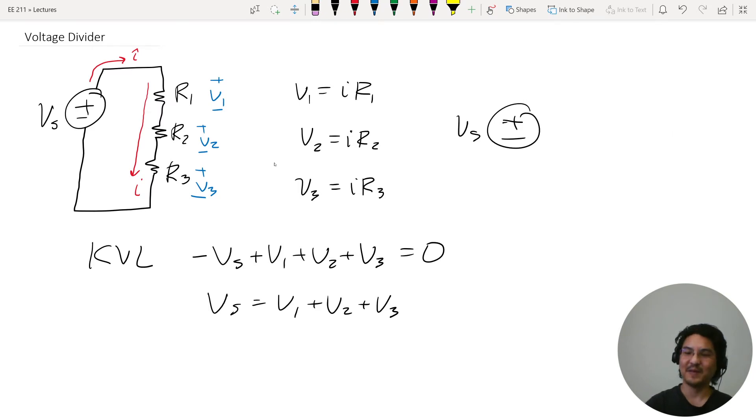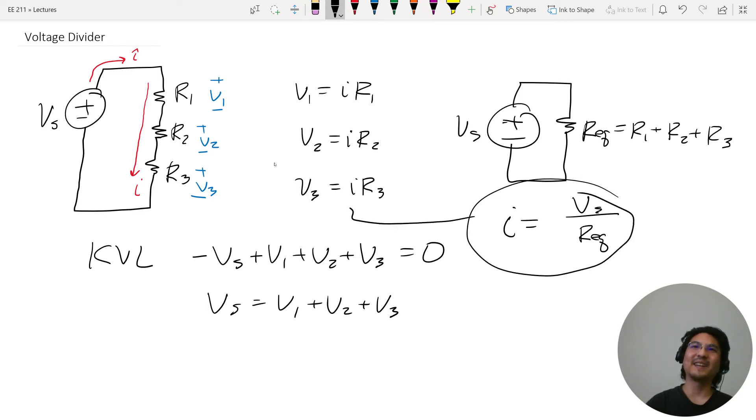And then we know the current is V over R equivalent, which is all this. So now you take this back into these. So then we'll know the voltage for each. I'll label these as equation 1, 2, 3, 4.